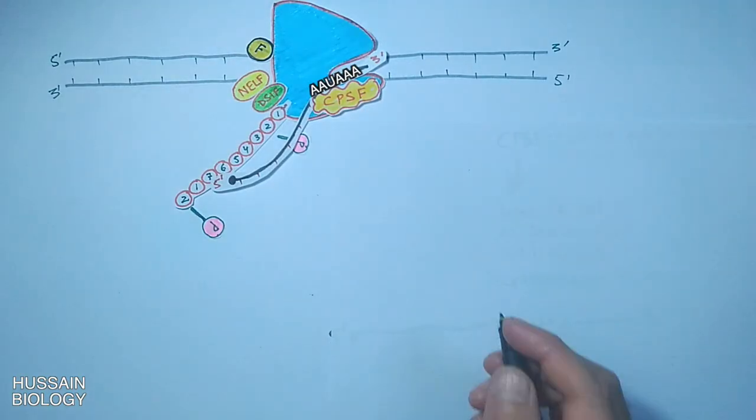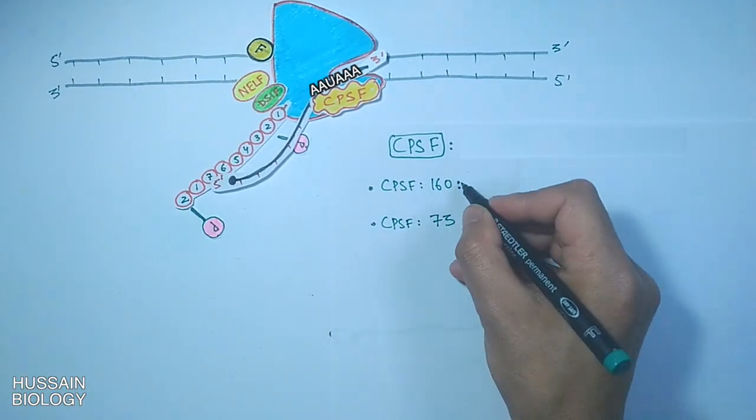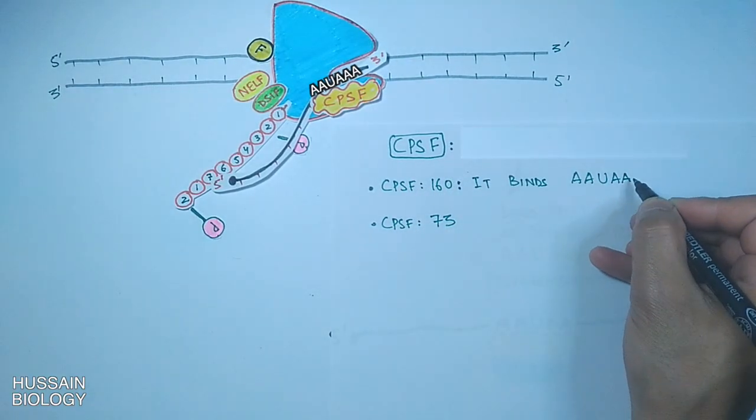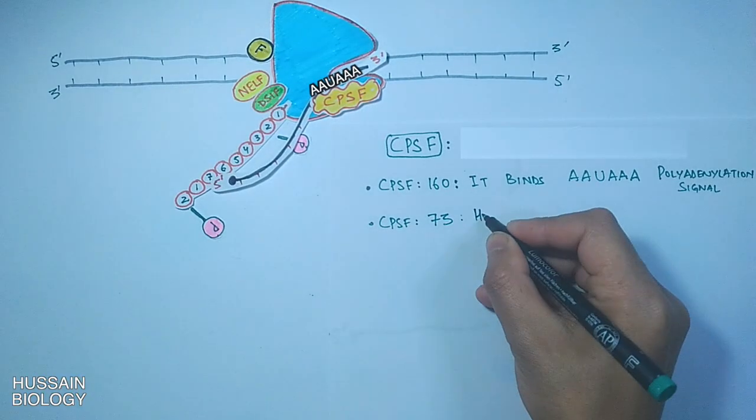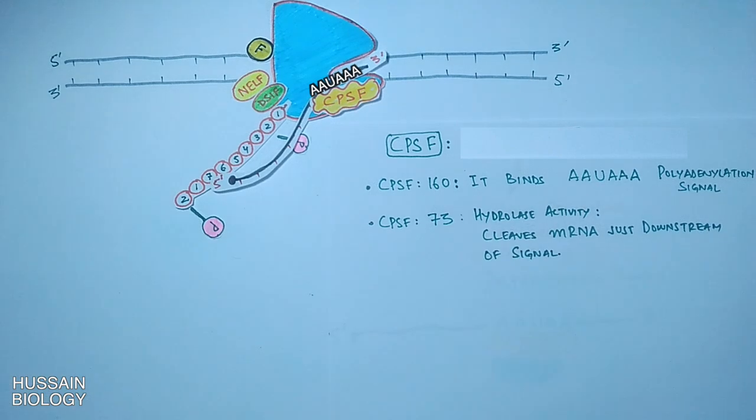We see the CPSF has two important subunits: subunit 160 and subunit 73. The subunit 160 binds AAUAAA signal, and subunit 73 shows hydrolase activity with which it's able to cleave the pre-mRNA from the complex just downstream of poly-A signal or AAUAAA sequence.